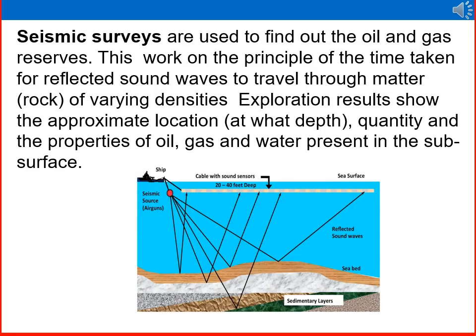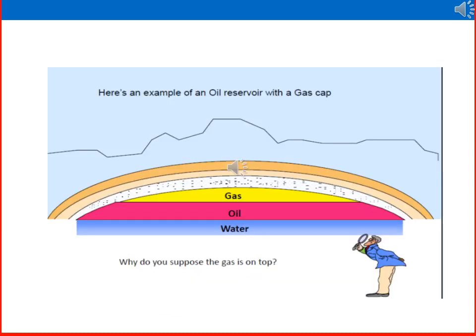Seismic surveys are used to find oil and gas reserves. They work on the principle of the time taken for reflected sound waves to travel through matter of varying densities. This determines the approximate location, depth, quantity, and properties of oil, gas, and water present in the subsurface. This picture shows an example of an oil reservoir with a gas cap — a symbolic representation of how a reservoir is identified by seismic survey exploration.